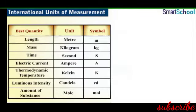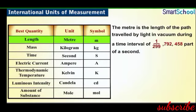Length is measured in meters, denoted by the small letter m. A meter is the length of the path traveled by light in a vacuum during a time interval of approximately 300 millionth of a second.